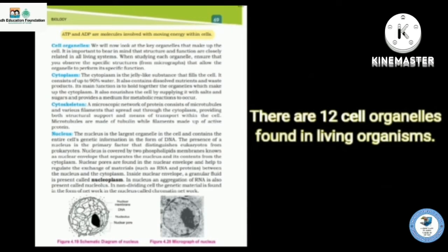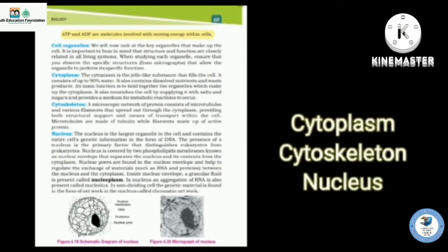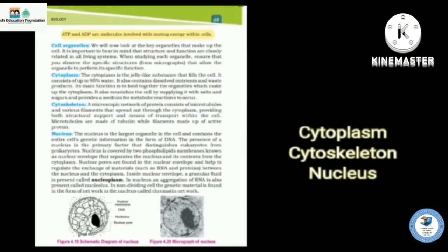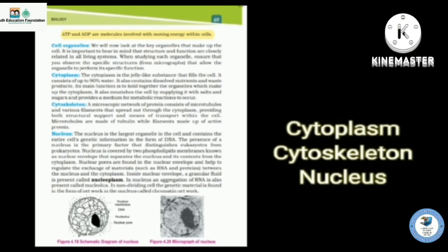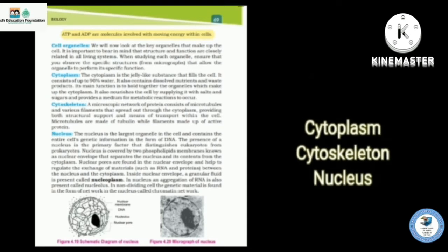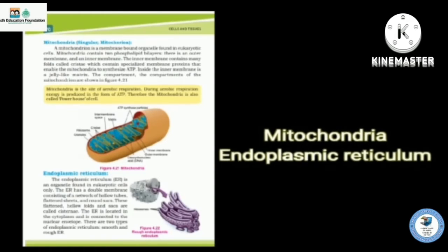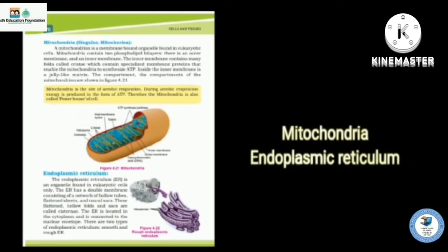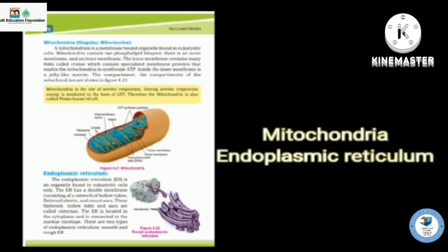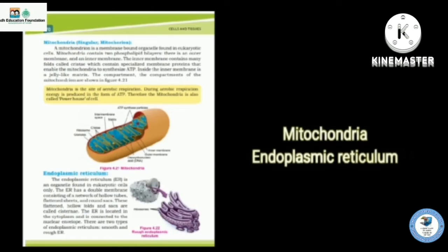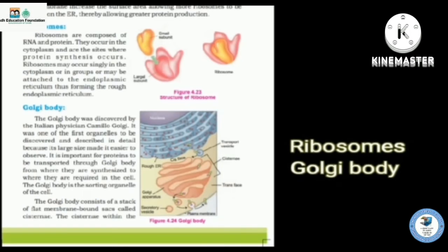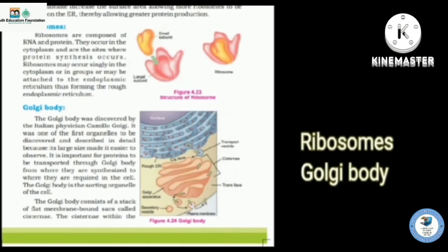There are 12 cell organelles found in living organisms: cytoplasm, cytoskeleton and nucleus. It contains genetic information. Then mitochondria, powerhouse of the cell and the endoplasmic reticulum. It contains two types, smooth and rough. Then ribosomes, it is the RNA factory. It makes proteins.